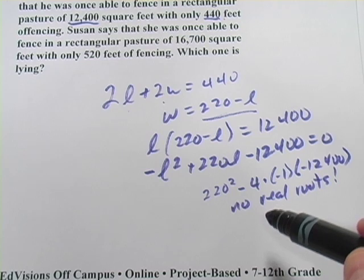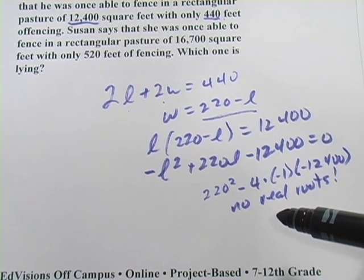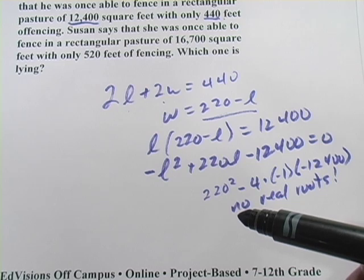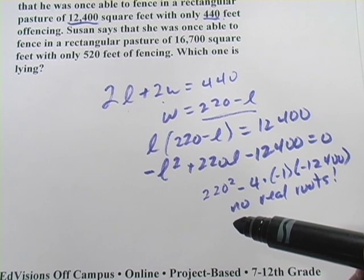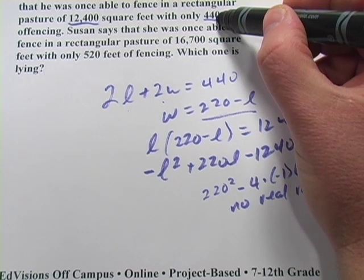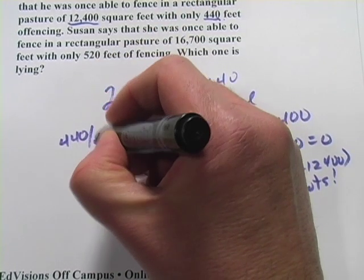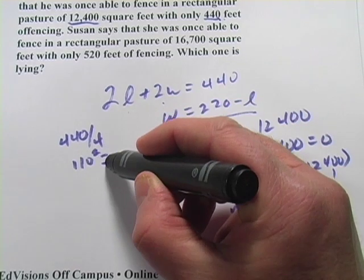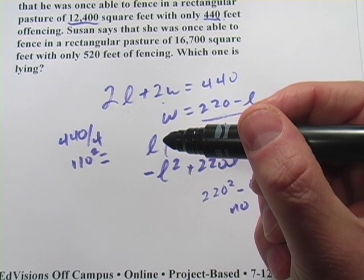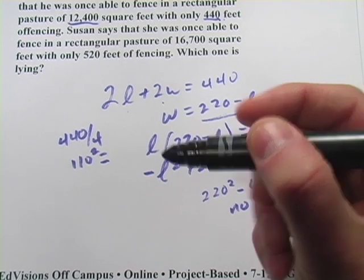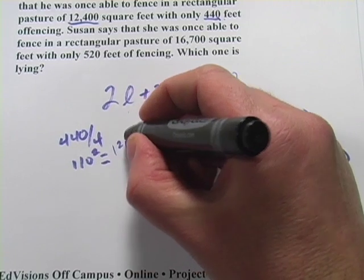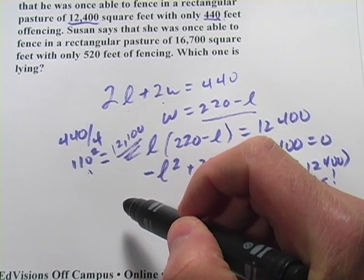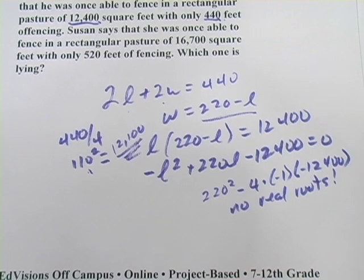One other way to go about this one, which makes it a lot easier if you know a secret. That secret is that if you're making rectangular shapes, the shape that is most efficient at increasing the area is a square when all the sides are equal. So you could take this perimeter, divide it by 4. So that's 110 and then that's one length of one of the sides of the square. If you square that, you would get the maximum area that could be fenced in there. So, let's see, 110 squared, that's 12,100 feet. So that's the most you could possibly fence in an area with 440 feet of fencing. And he's claimed 12,400, so he's definitely lying.